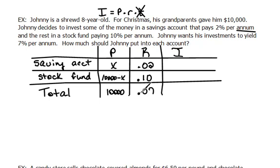Once we have the first two columns identified, then principal times rate is interest. So our interest column would just be the multiplication of the first two. So I'm going to show that I'm multiplying those first two columns together. And now I have my interest column. Now the problem said he's going to get some interest off of this account and some interest off of this account, and he wants to make a total amount of interest. Here is our equation.